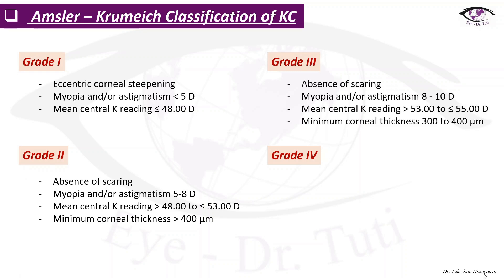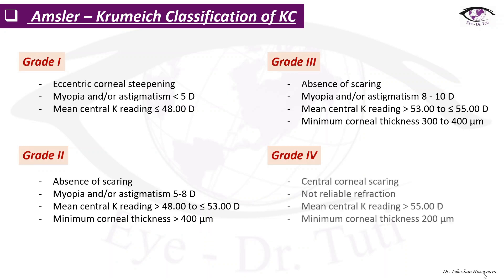Grade 3 is not characterized with scars, myopia with or without astigmatism between 8 and 10 diopters, K readings between 53 and 55 diopters, and minimum corneal thickness between 300 and 400 microns. Grade 4 is characterized with corneal scarring, not reliable refraction, K readings more than 55 diopters, and minimum corneal thickness of 200 microns or less.